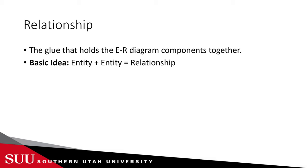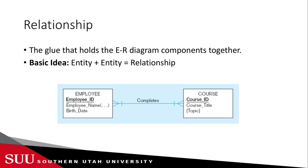The basic idea is that an entity plus another entity equals a relationship. Now it does not have to be two entities — it can be more than two entities, and we can also have a relationship from an entity type to itself, as we will see in upcoming examples. This figure shows us the relationship between the employee entity type and the course entity type, where the relationship is 'complete.'